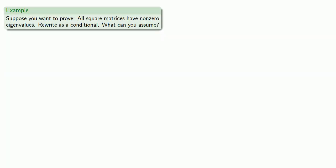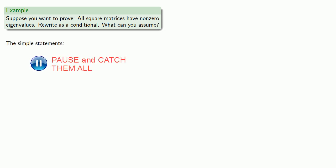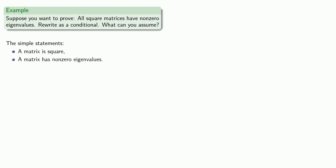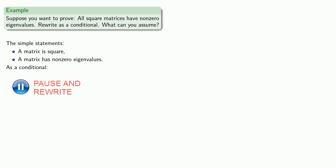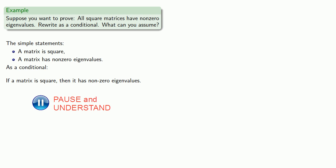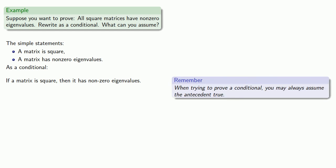For example, suppose you want to prove: all square matrices have non-zero eigenvalues. Let's rewrite this as a conditional. First, find our simple statements: a matrix is square, and a matrix has non-zero eigenvalues. Now we can rewrite: if a matrix is square, then it has non-zero eigenvalues. Since we may always assume the antecedent true, we can begin by saying: suppose M is a square matrix.